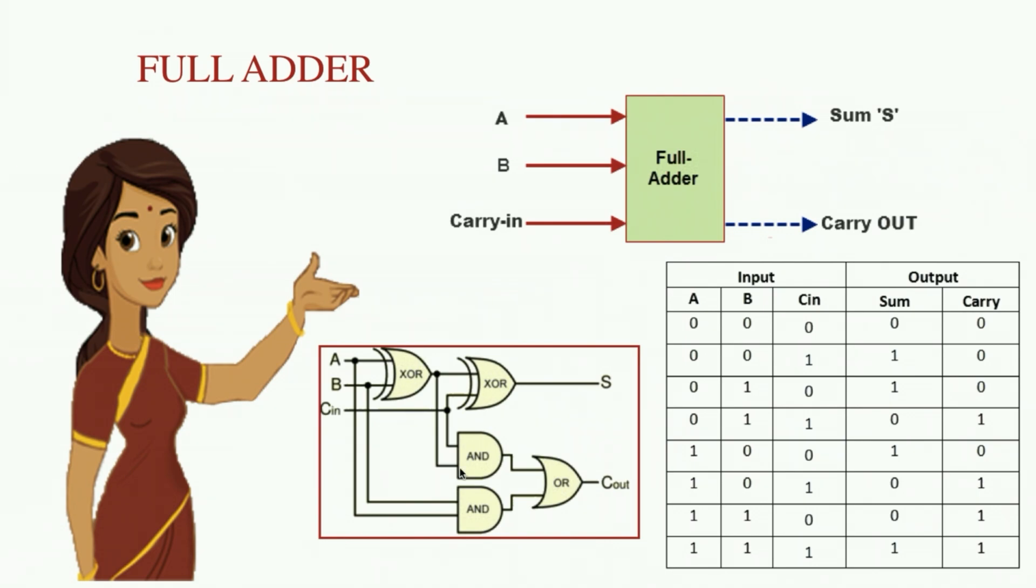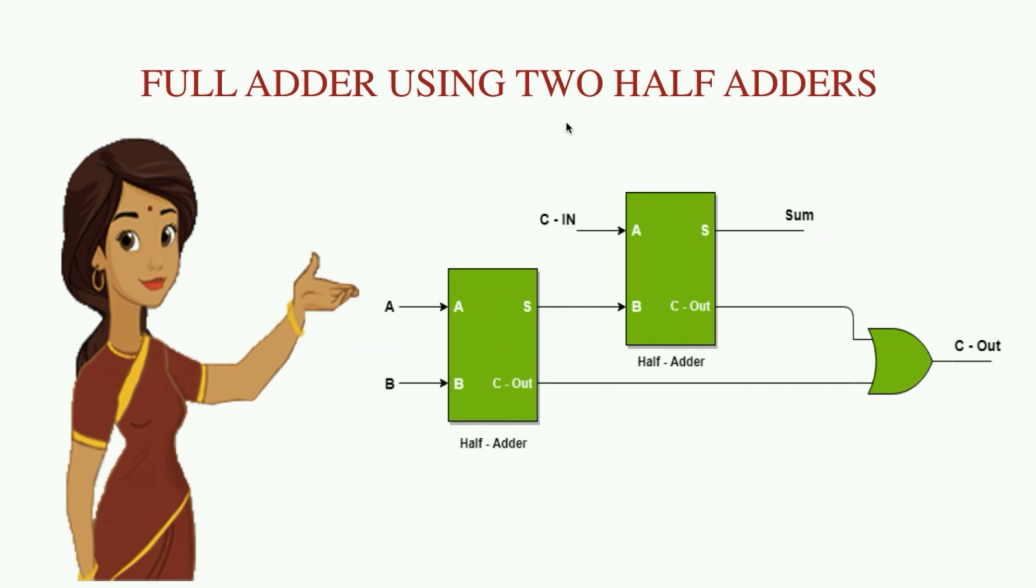A full adder can be implemented using two half adders where the first half adder gets two binary inputs A and B, and the second half adder gets the sum of the previous half adder and an additional carry bit as the input to produce a sum. The carry out of both the half adders can be combined together to produce the overall carry out.